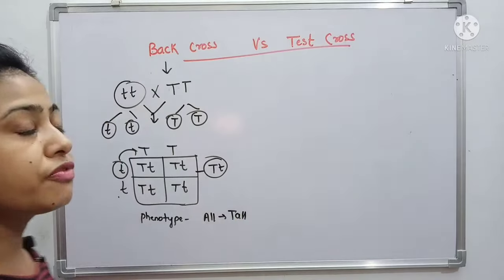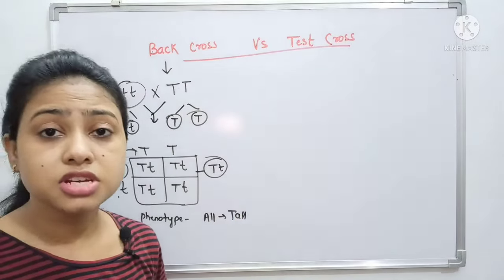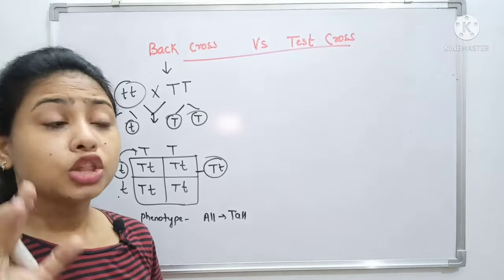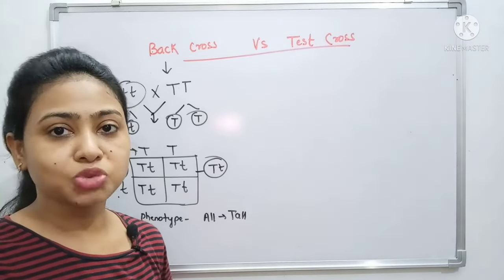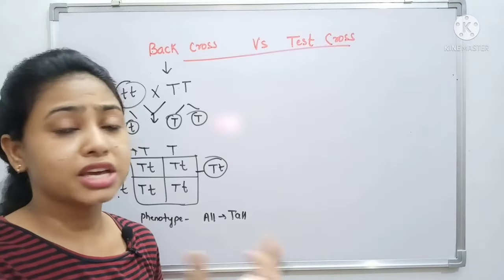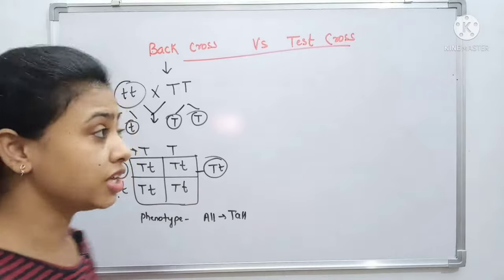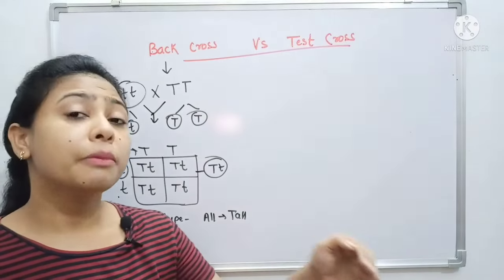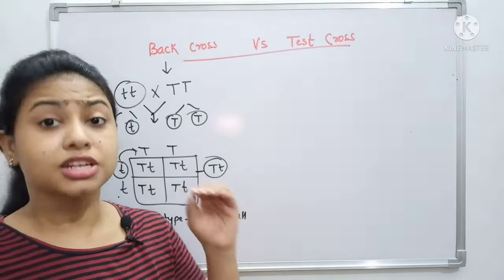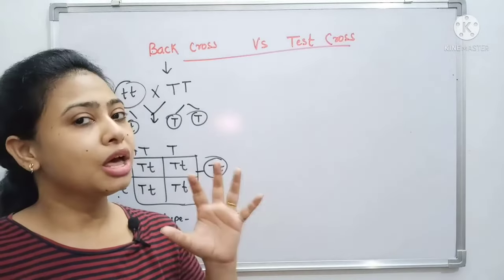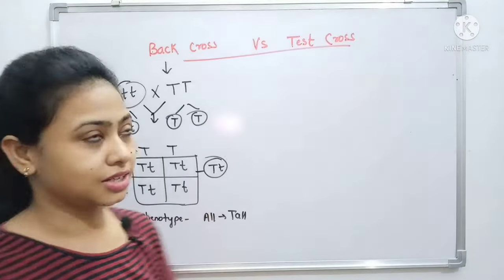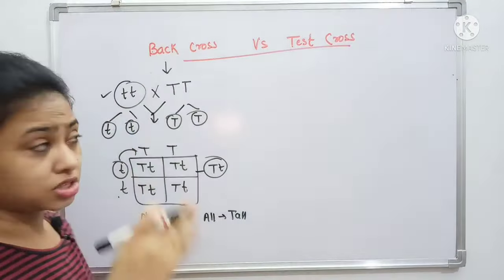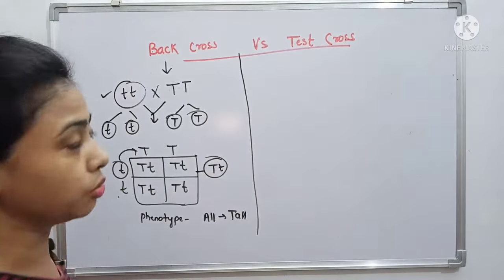So the dwarfness will not appear in the next generation. Intentionally, if I don't want that trait in my next generation, I cross to produce the desired dominant progeny. This is called a back cross.